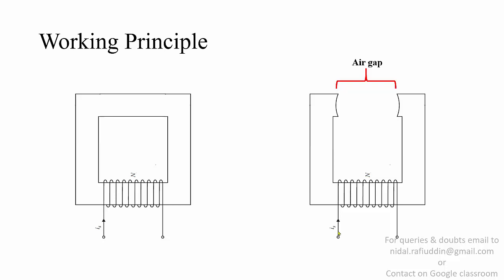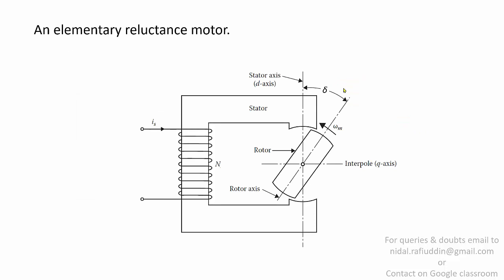To understand the working principle of this motor, let us first understand the property being employed. Shown here are two figures, each having a core made of low-reluctance material — one completely closed while the other has an air gap. Of course the one with the air gap has larger reluctance since air has larger reluctance compared to the core material. This is an elementary reluctance motor comprising a stator core with a winding of N turns to produce a magnetic field, and a small bar as the rotor which is free to rotate. We define two axes: the stator axis or d-axis (direct axis), which goes along the direction of the magnetic field when the stator is energized, and the interpolar or q-axis (quadrature axis), which is perpendicular to the d-axis.